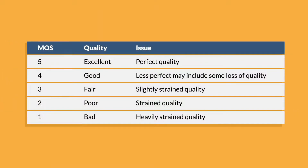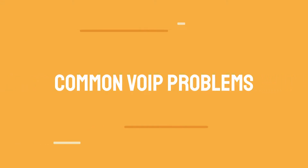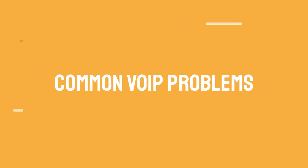On average, a good VoIP MOS score typically falls between 3.5 to 4.2. If you notice too many low scores, you must start investigating. To troubleshoot VoIP issues, you first need to be aware of the different issues that could affect your call quality, so you can identify which issue is affecting your calls and fix those issues accordingly.